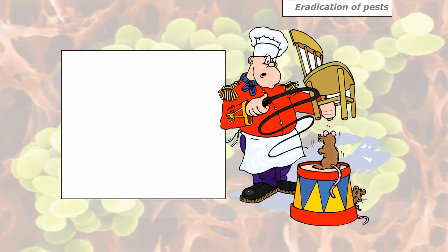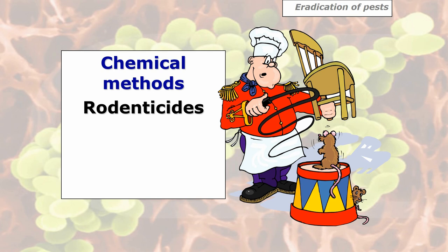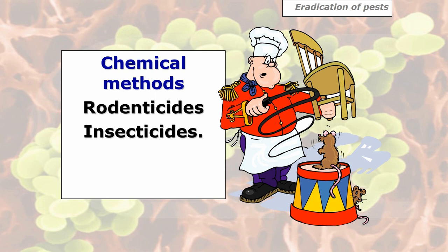The less preferred option is chemical methods — using rodenticides for rodents and insecticides for insects. Several reasons why we shouldn't use chemicals: if you're not COSHH qualified, you could end up poisoning your customers. Also, if you use certain types of rodenticides, you could end up with a rat that gives birth to young which are immune to that rodenticide, because you fed it a chronic-acting poison. It takes about seven or more days to die, and if it's pregnant and about to give birth, by DNA transference that chemical can pass into the young's DNA, making them immune to that chemical.